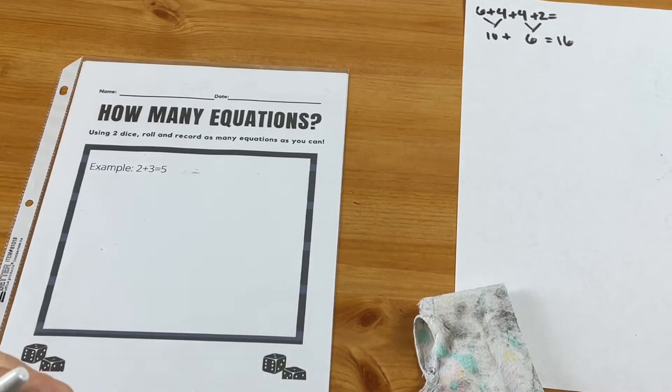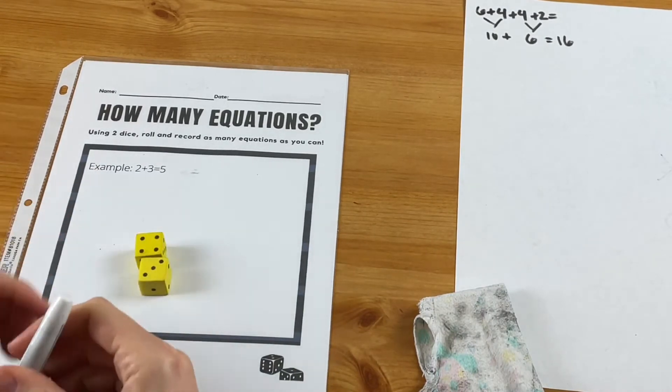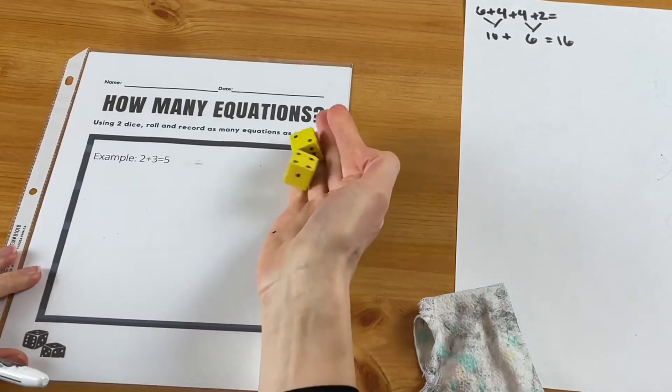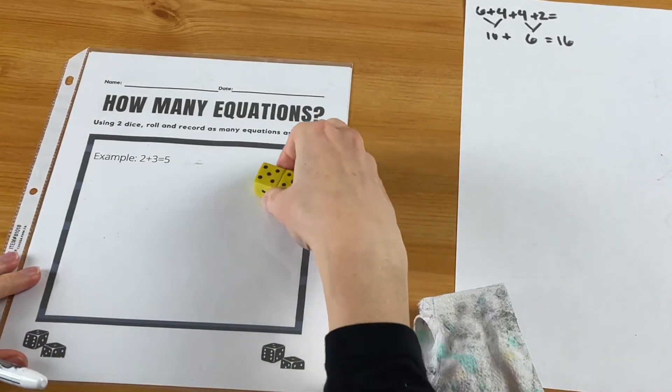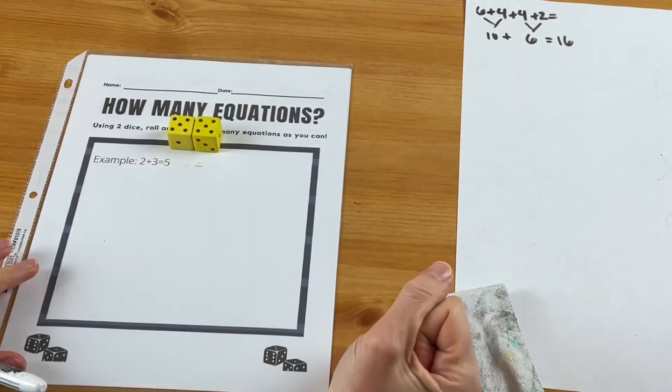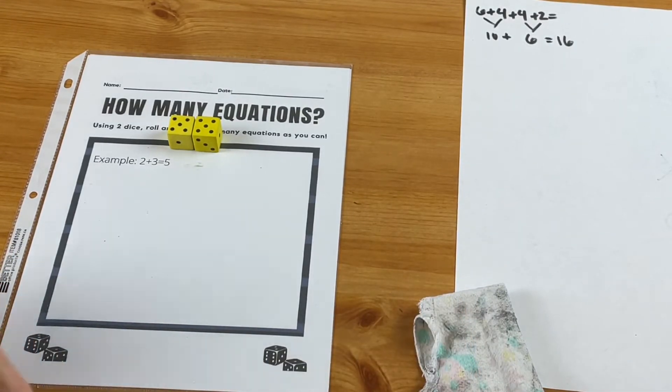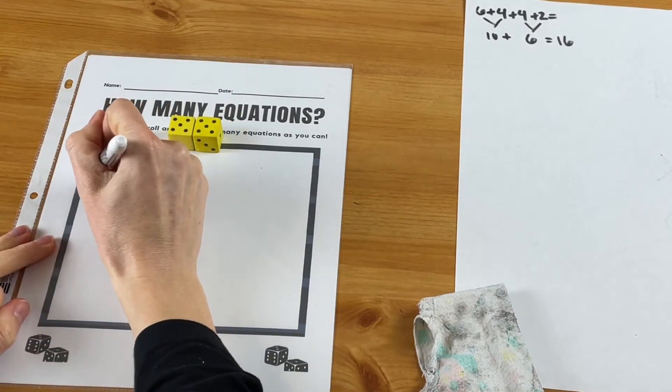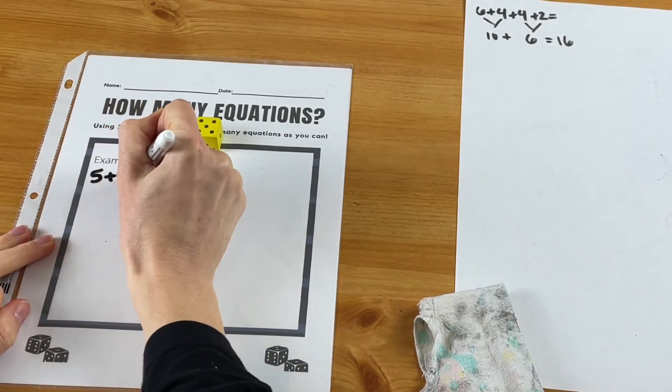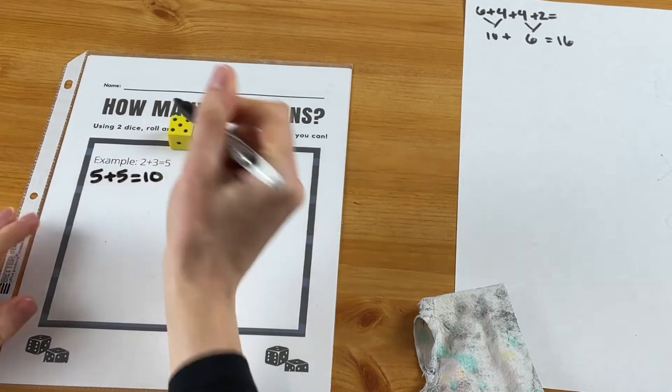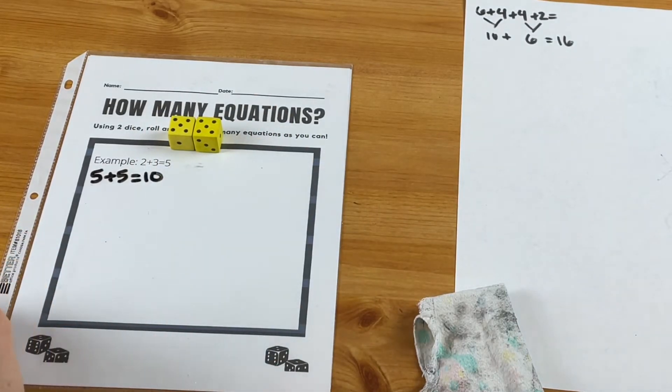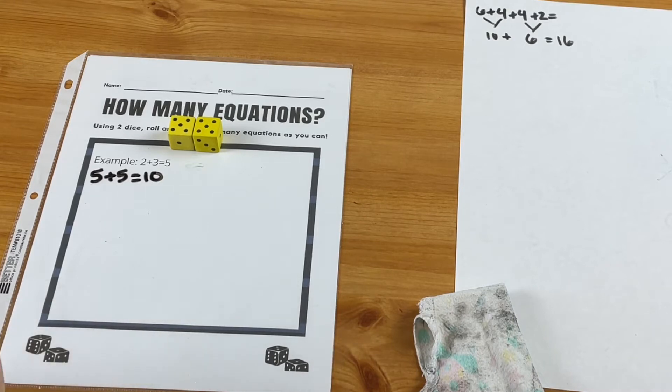All right, for this game 'How Many Equations' you can start with two dice and you will roll. With those two numbers you can make as many equations as you can - which we might not get very far since we rolled a double - but the idea is to just record as many as we can. Your kiddos might pick up on some subtraction.